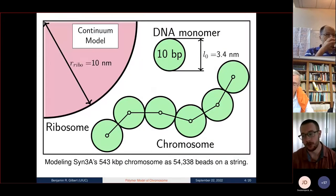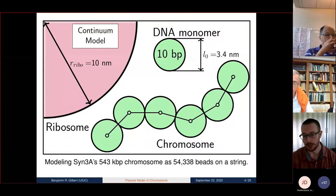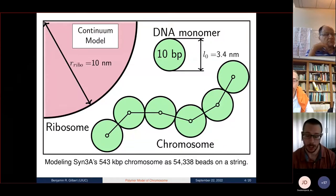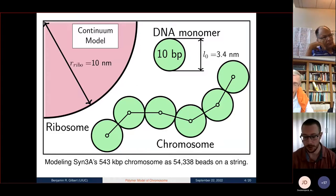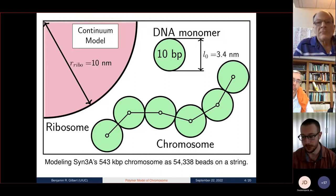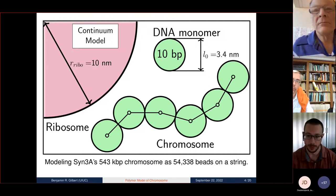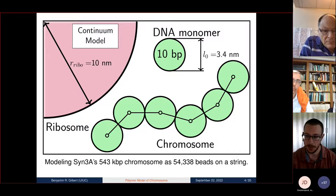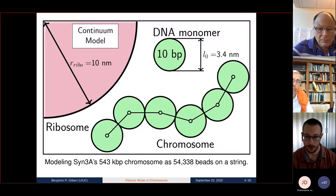Moving forward, there were some drawbacks with the lattice model, so now I'm creating a continuum model of the chromosome of SYN3A. In this continuum model, the 543 kilobase pair circular chromosome is modeled as around 54,000 beads on a string, where these beads are DNA monomers that each contain 10 base pairs of DNA and are 3.4 nanometers across.